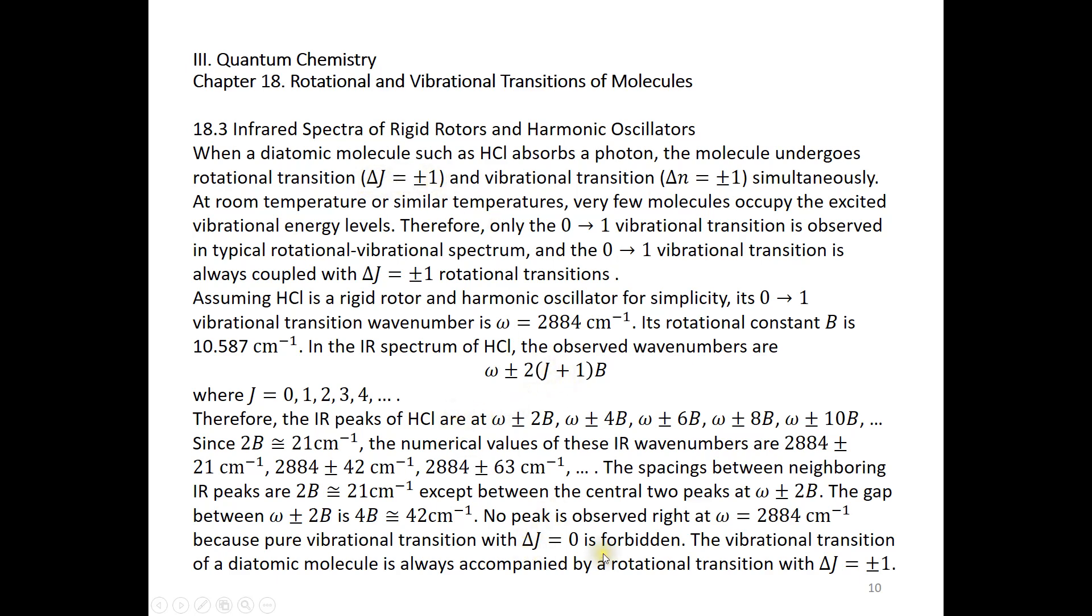Again, a photon has an angular momentum of plus H bar or negative H bar. When the molecule absorbs a photon, its angular momentum has to change. That's why the value of J must change as well. We cannot have delta J equals zero. The vibrational transition of a diatomic molecule is always accompanied by a rotational transition with delta J being plus or minus 1.